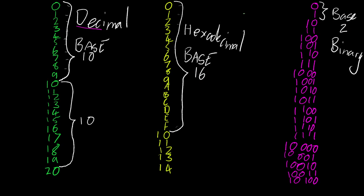All of these number systems are equivalent representations. Zero equals zero all the way through from decimal to hex to binary. For example, four in decimal is the same as four in hexadecimal, which is the same as one, zero, zero in binary.